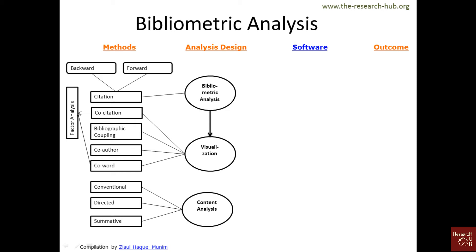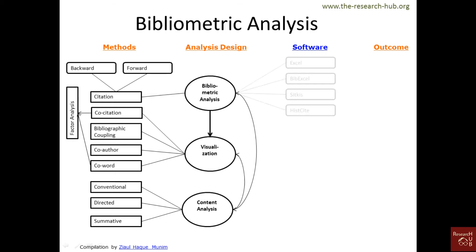In bibliometric analysis, doing only citation analysis and visualization is often not enough to get published in a good journal. It is always a good idea to couple different methods — for instance, bibliometric and content analysis together, or bibliometric visualization and content analysis, combining all three. You can find papers on ResearchGate showing how this was done.